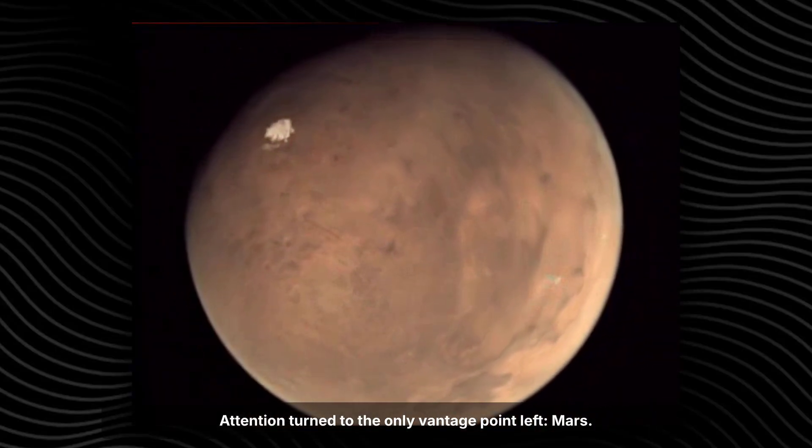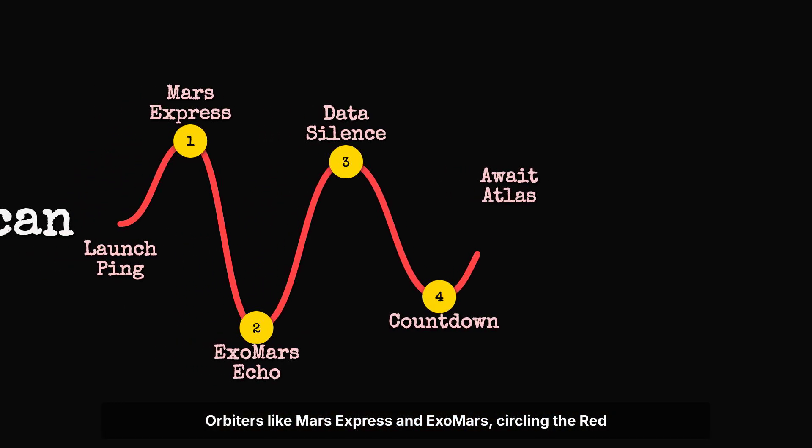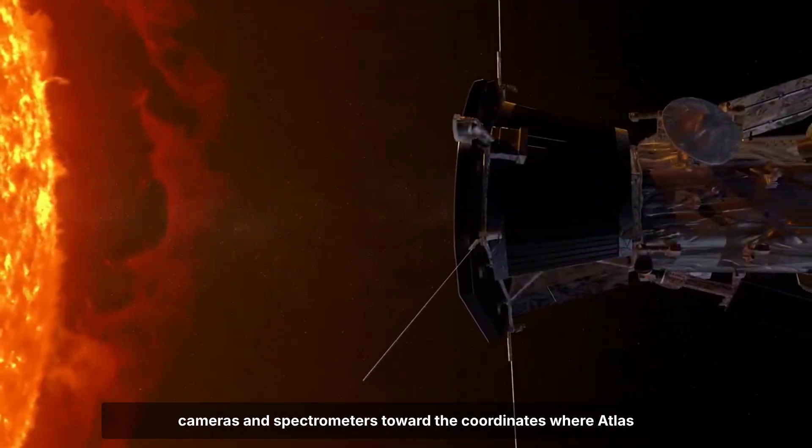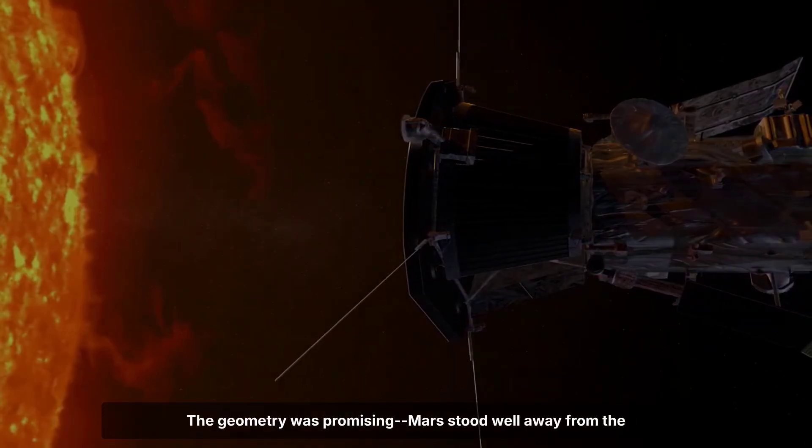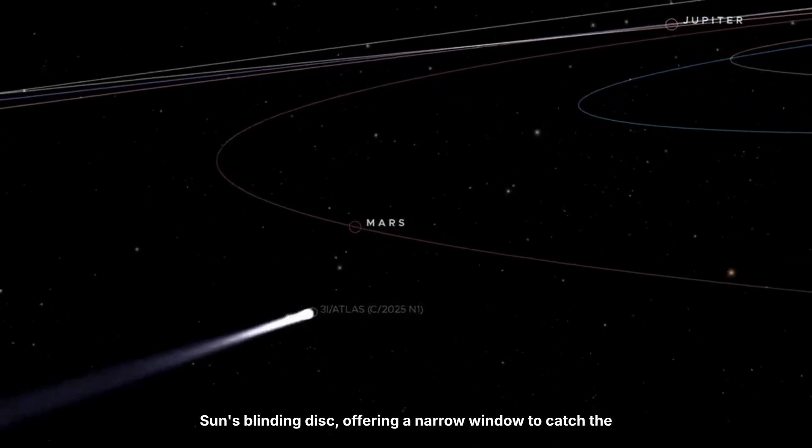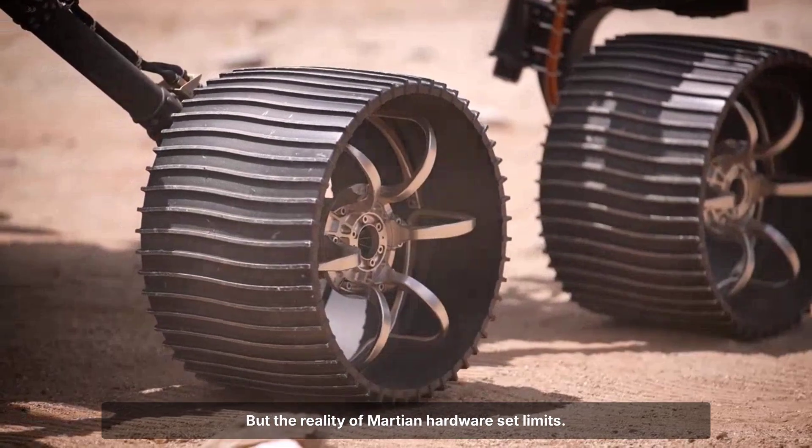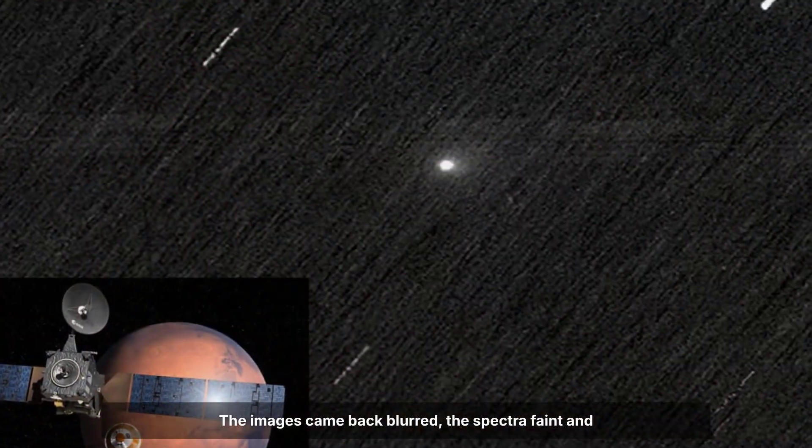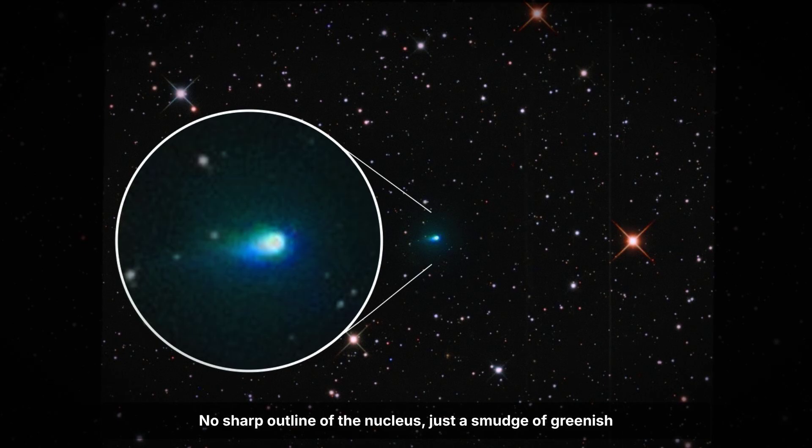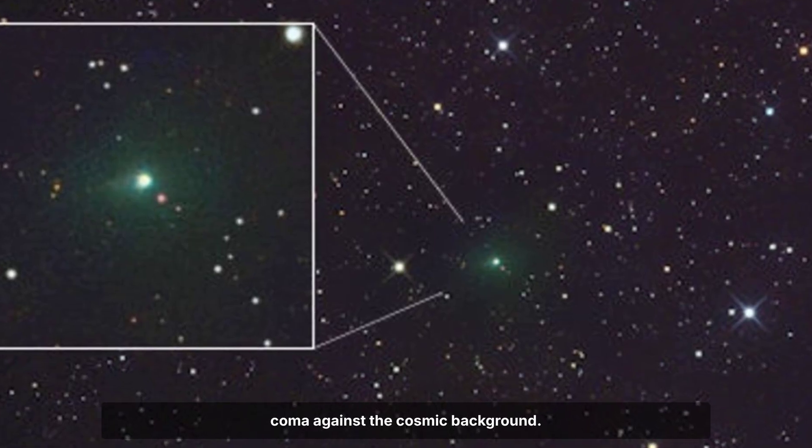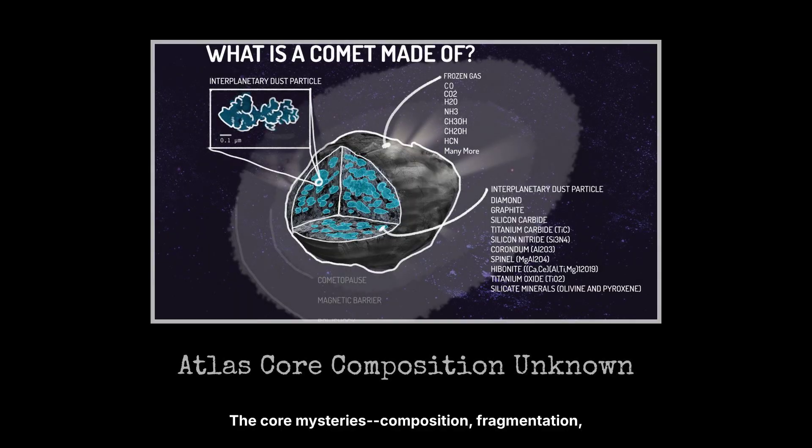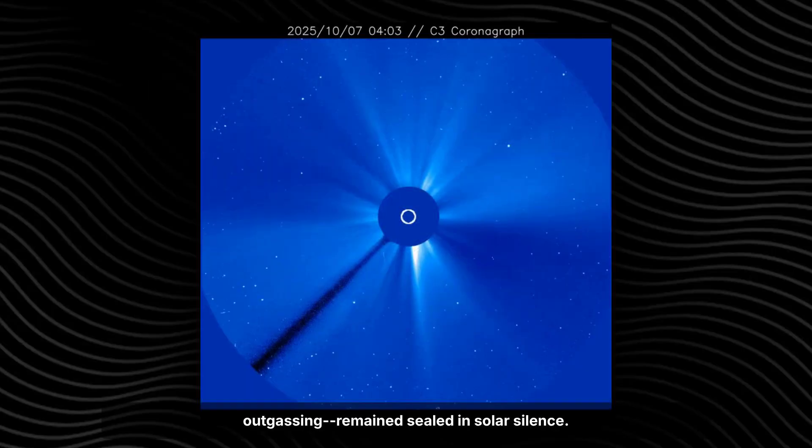Attention turned to the only vantage point left, Mars. Orbiters like Mars Express and ExoMars, circling the red planet on the far side of the sun from Earth, aimed their cameras and spectrometers toward the coordinates where Atlas should have been. The geometry was promising. Mars stood well away from the sun's blinding disk, offering a narrow window to catch the interstellar visitor as it slipped past. But the reality of Martian hardware set limits. The images came back blurred. The spectra faint and unresolved. No sharp outline of the nucleus. Just a smudge of greenish coma against the cosmic background. The data hinted at activity, but nothing more. The core mysteries – composition, fragmentation, outgassing – remained sealed in solar silence.